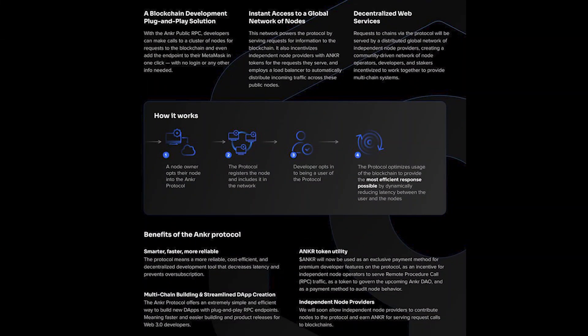You also have instant access to a global network of nodes. This network powers the protocol by serving requests for information to the blockchain. It incentivizes independent node providers with Anchor tokens for the requests they serve, and it employs a load balancer to automatically distribute incoming traffic across public nodes. It also offers decentralized web services, which ties back to what I was saying about Web 3.0.